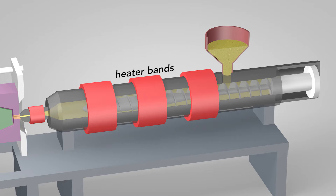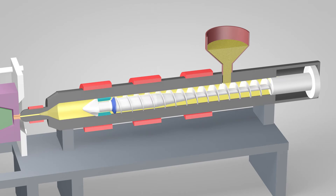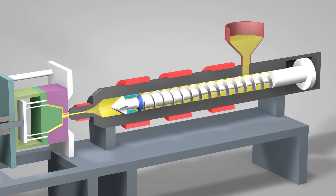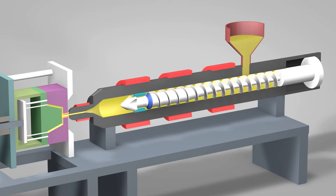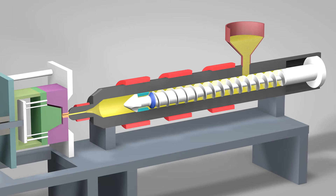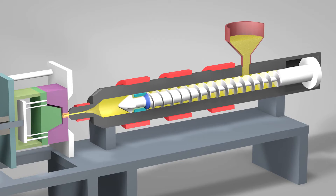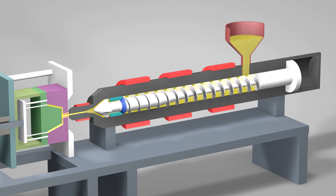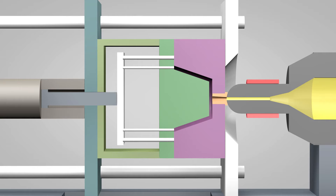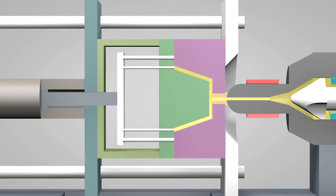Heater bands wrapped around the barrel warm up the plastic pellets. As the pellets are moved forward by the screw, they gradually melt and are entirely molten by the time they reach the front of the barrel. Once enough molten plastic is in front of the screw, it ramps forward like the plunger of a syringe. In a matter of seconds, the screw injects the molten plastic into the empty part of the mold called the cavity image.